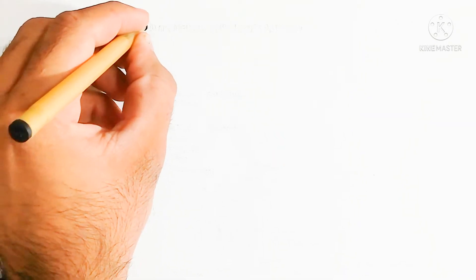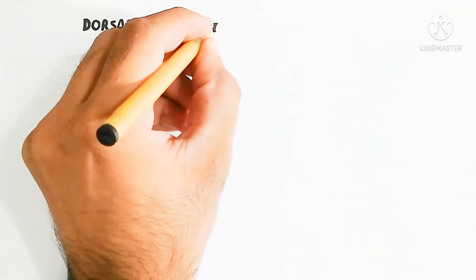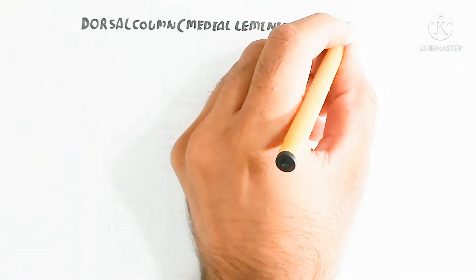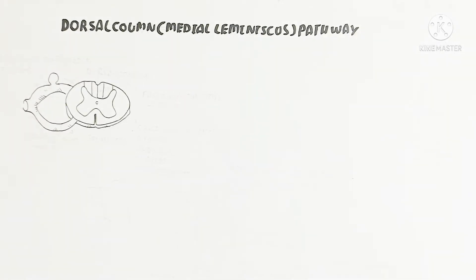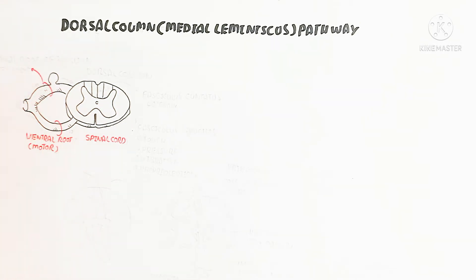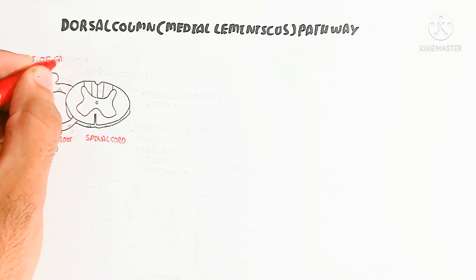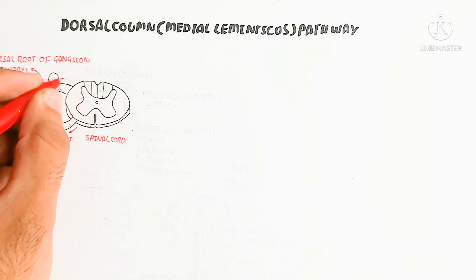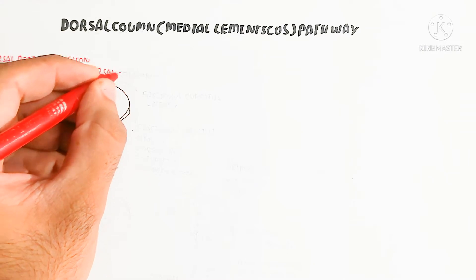In this video we will discuss the dorsal column medial lemniscus pathway, the body balance proprioception pathway, and the pain pathway. First, we will recap the spinal cord cross section. Here are the sensory neurons and motor neurons in the form of sensory ganglia — the ventral root is used for motor neurons away from the central nervous system, while the dorsal root ganglion is for sensory reception.